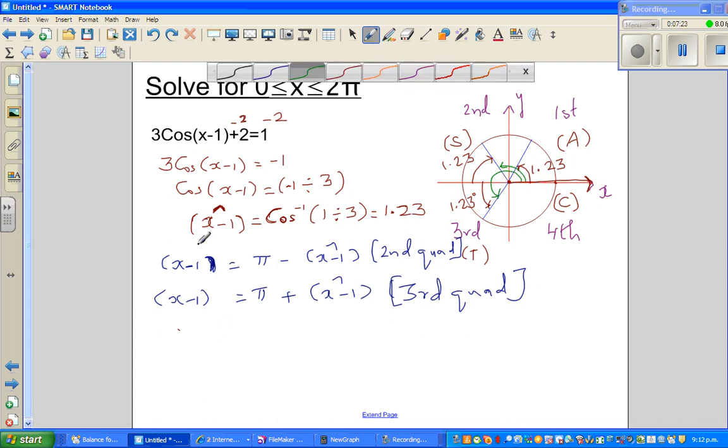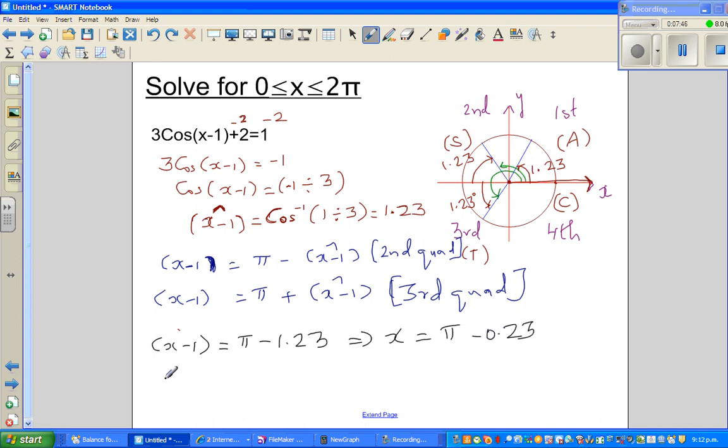So therefore I can say, let me bring back black. So x minus 1 is π minus 1.23. But we're interested in x, which implies x, if you add 1 to both sides. I hope you understand this is π minus 0.23.